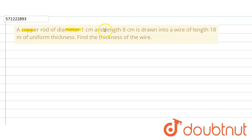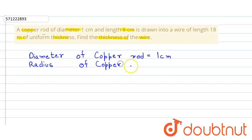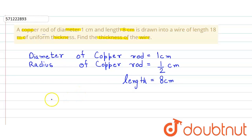In the given question, a copper rod of diameter one centimeter and length eight centimeter is drawn into a wire of length 18 meters of uniform thickness. We have to find the thickness of the wire. The diameter of the copper rod is one centimeter, so the radius will be one divided by two centimeter, and the length is equal to eight centimeter.